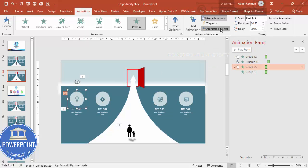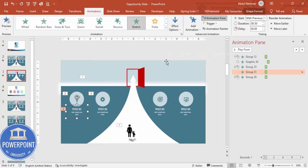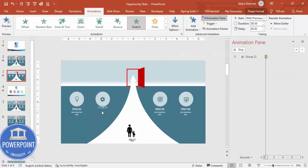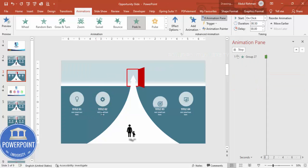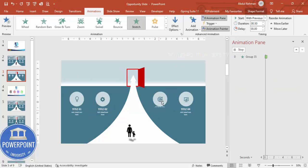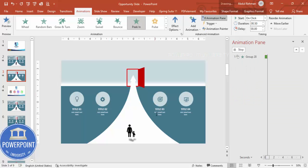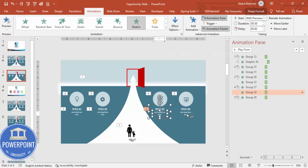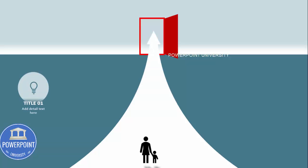Select the animated object and click Animation Painter, then click the second option to copy the animation. Repeat this for each option one by one. When you do a slide show, you can see the full animation plays through correctly.